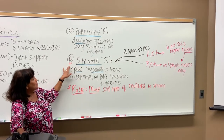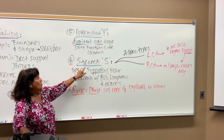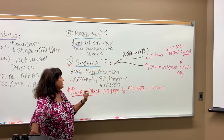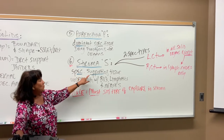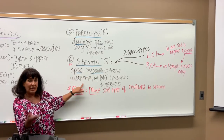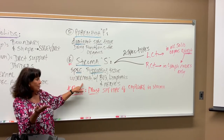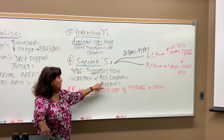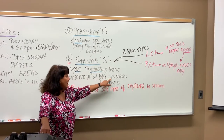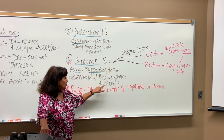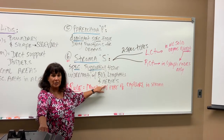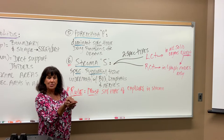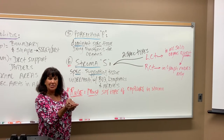Number six is the stroma — the big S. It's the specific supporting tissue underneath that's going to feed the dominant cells. It's going to have blood vessels, lymphatic veins and capillaries, and nerves underneath controlling the dominant cells that are piled on top of it.